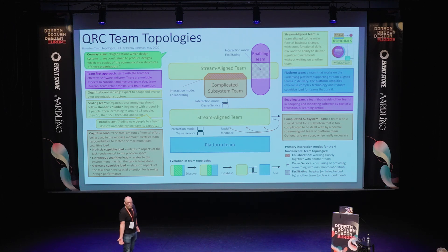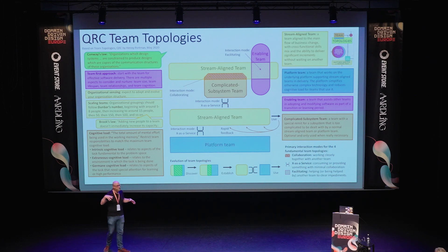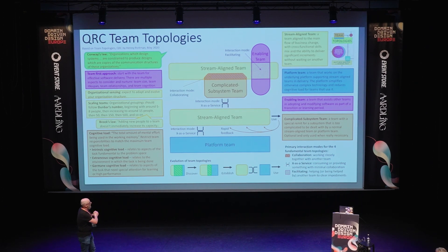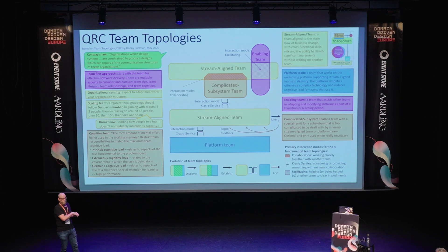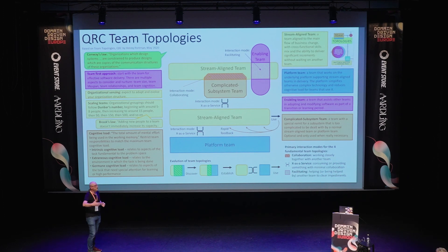There are of course a lot more things in the book. The basic idea is you want to communicate in a specific way — are we going to collaborate, facilitate, or work as X-as-a-service? And then you write it in your team API. Your team API is a document about your team: this is our team, these are our members, this is what we work on, and this is how you can work with us. It's about trying to get your cognitive load lower — having autonomous teams with low cognitive load so they can get into their flow.